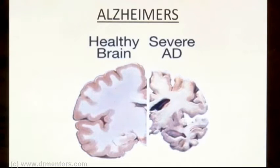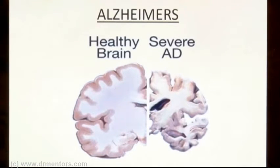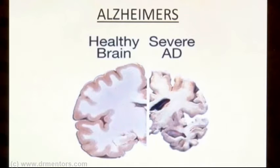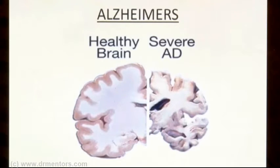This image gives you a comparison between the degree of atrophy seen in the Alzheimer's patient as compared to a healthy brain of a normal patient. Alzheimer's disease is a neurodegenerative disease characterized by generalized atrophy of the brain, predominantly of the temporal and parietal lobe, even though it is general in nature.